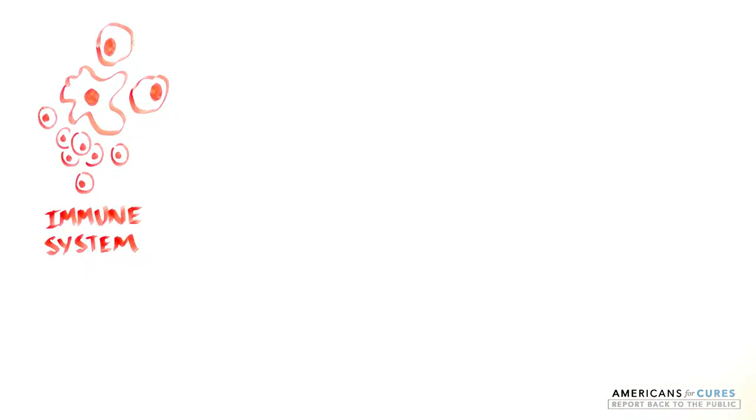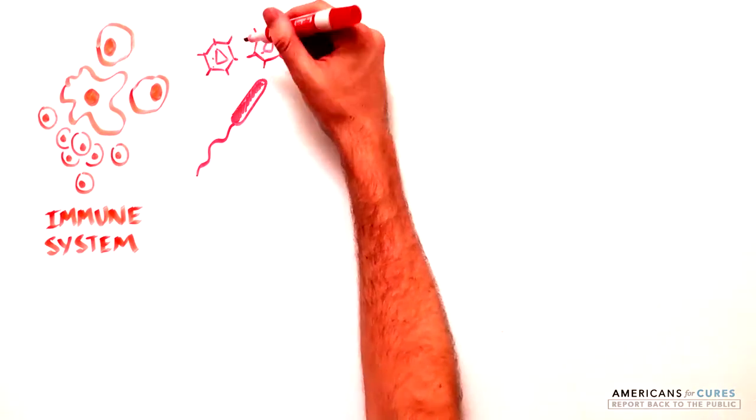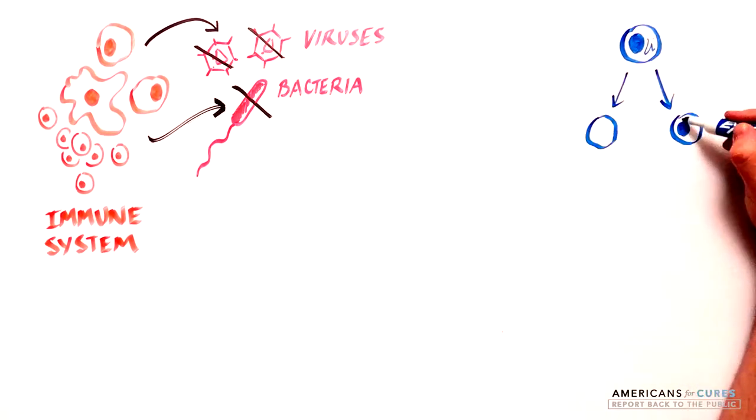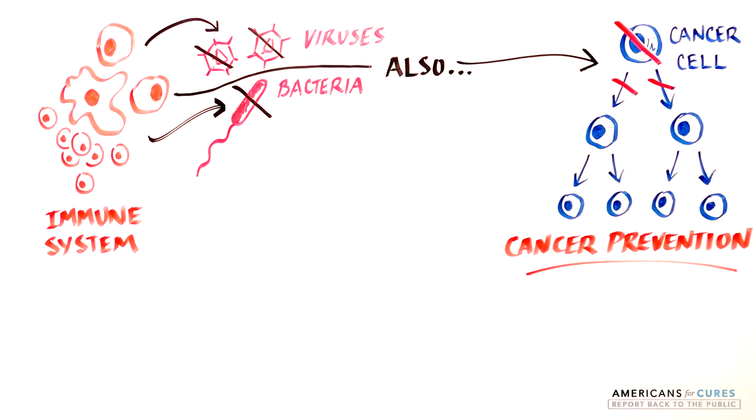When we think of the immune system, we think of its role in keeping us healthy and killing disease-causing pathogens that enter our body, such as bacteria or viruses. But the immune system is also in charge of killing any cell that may start to misbehave in an attempt to prevent cancer.